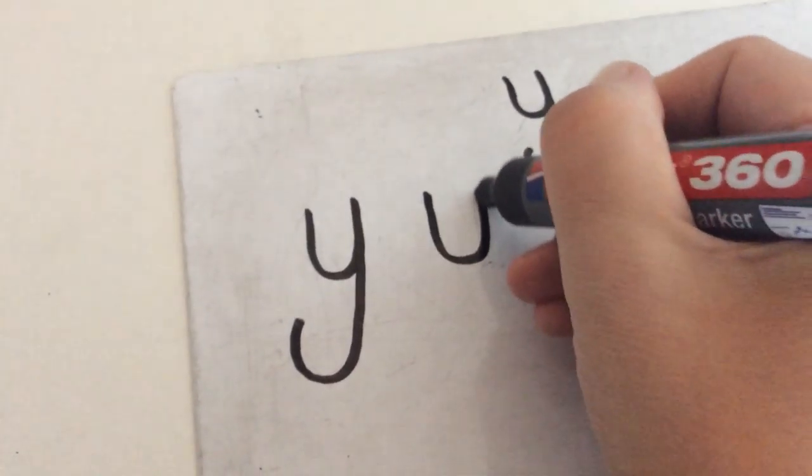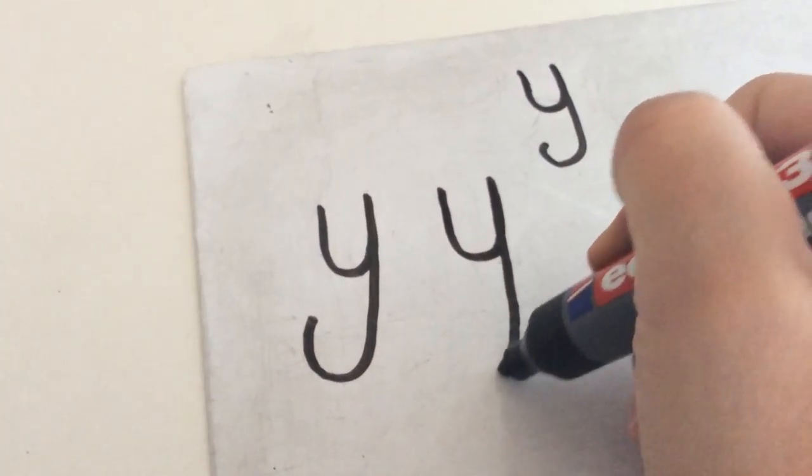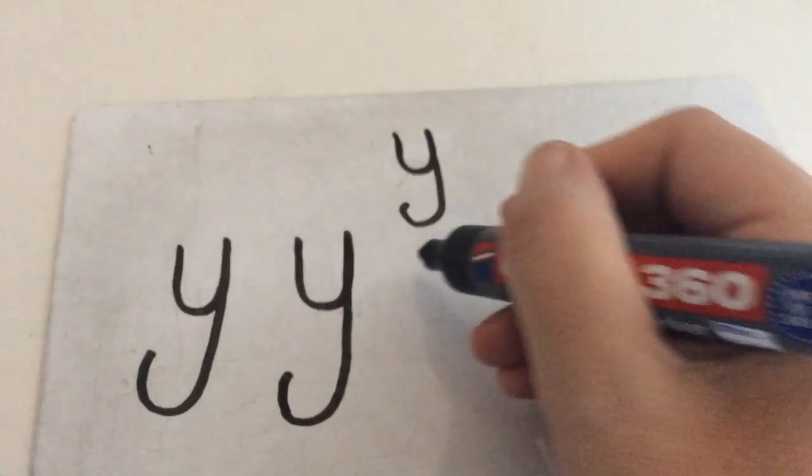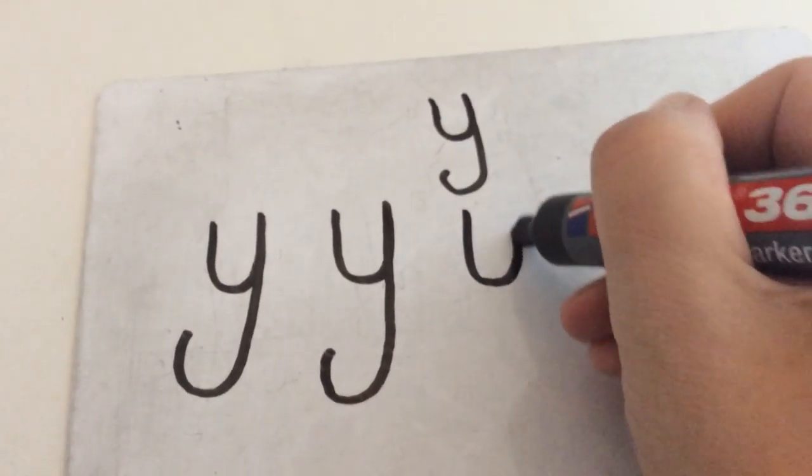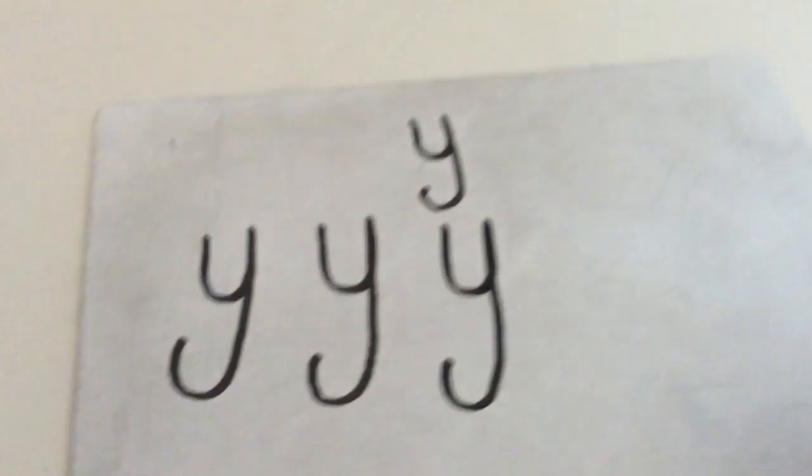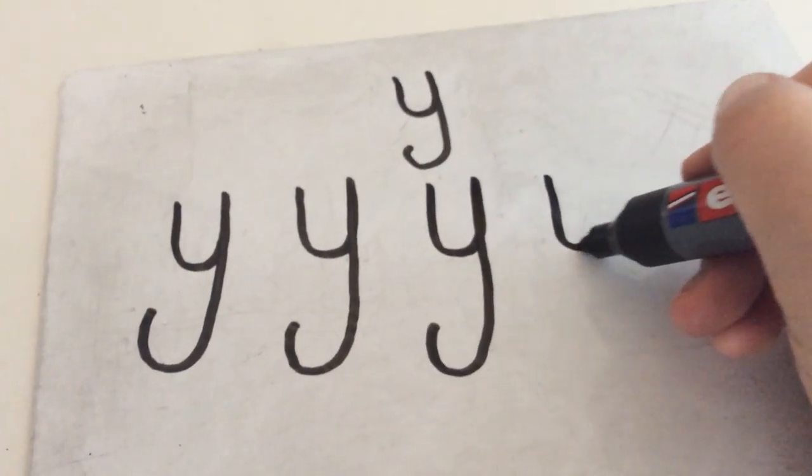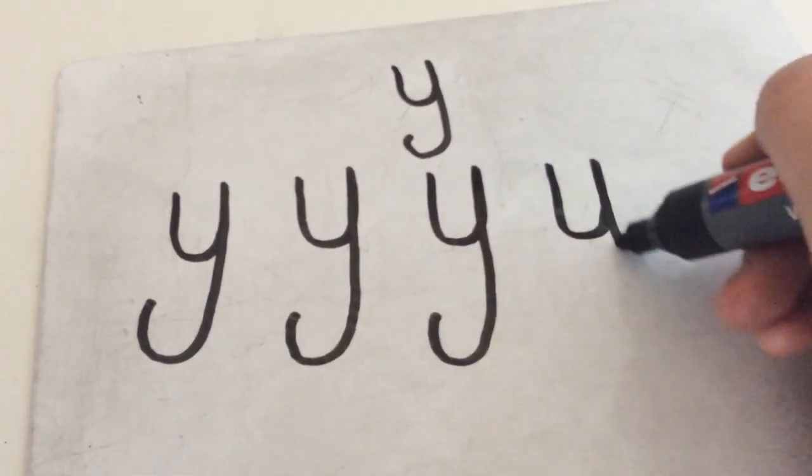So, down, curve round and up, down, curve round, give him a tail. Down and curve round and up, down and give him a tail. Down, curve round, up, down, curve, give him a tail.